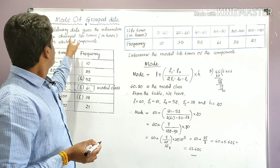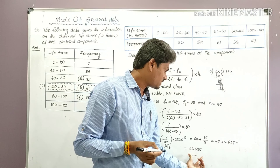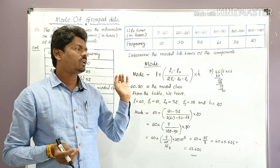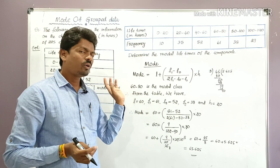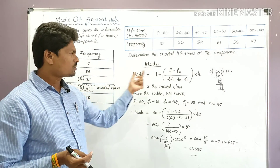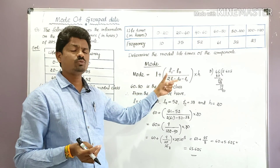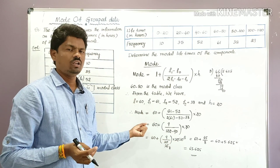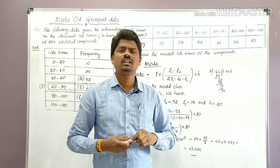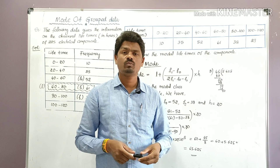So the modal lifetime of the components is 65.625 hours. Among mean, median, and mode, finding the mode is very easy — just remember the formula, identify the values from the table, substitute, and simplify. In the next class, we will learn about the drawing of ogives. Subscribe to my channel, Learn More Maths by Varakumar Vatanala.